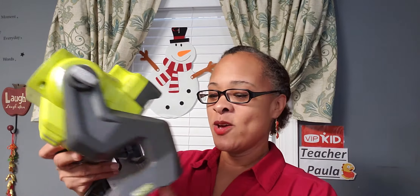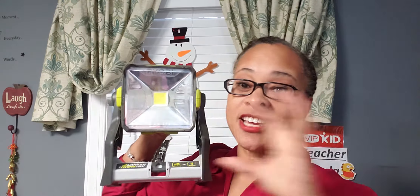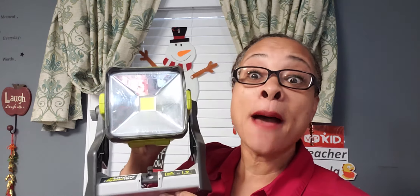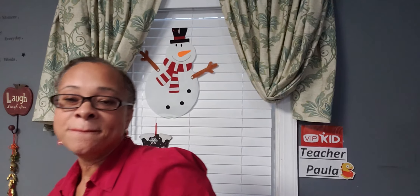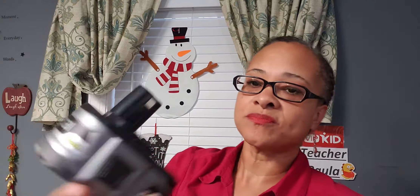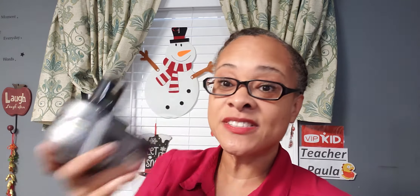My husband has this Ryobi light — it is the truth, it is a serious light. He uses it when he's doing construction, finishing the other half of our basement. He walked around the house with this light because it is amazing — it's battery operated, so we did not have to worry about power. It comes with a Ryobi battery. He has a whole charging station in the garage with several of these batteries — you stick the battery inside and the magic happened.